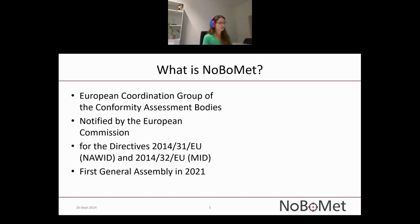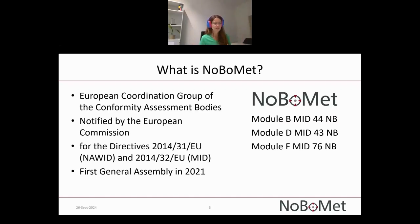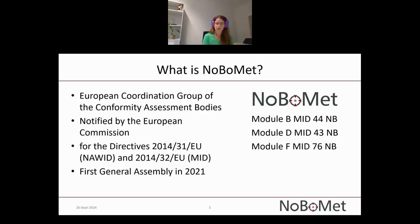NOBOMED was founded and had its first General Assembly in 2021. To give you an overview of the size, I looked it up in the NANDO database using the Measuring Instruments Directive. For Module B (type examination), you will find 44 active notified bodies. For Module D it's 43, and for Module F it's 76. Overall, it's about a bit over 100 notified bodies gathered at NOBOMED.